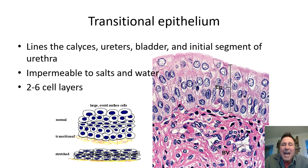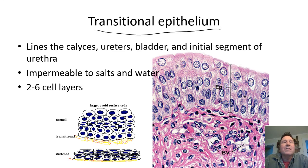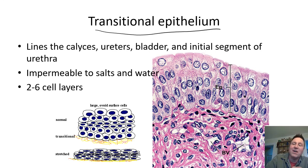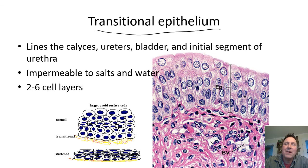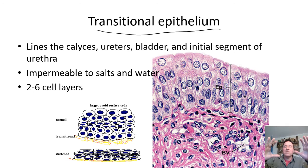Now we'll get to the anatomy and how it works on its way down. Early on in histology we looked at stratified squamous, simple squamous, cuboidal, columnar — and there was transitional epithelium. I said it's only found in the bladder and close by, which is true. It starts in the calyces and goes all the way down the ureters, in the bladder, and into some of the urethra.